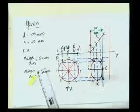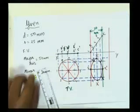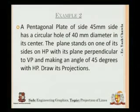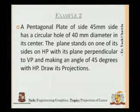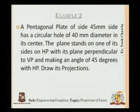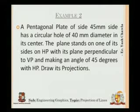I've drawn the top view as well as the front view — both of them are available to me. So let's move on to the next question. A pentagonal plate of side 45 mm has a circular hole of diameter 40 mm in its center. The plane stands on one of its sides on HP, with its plane perpendicular to VP and making an angle of 45 degrees to HP. You have to draw its projection.